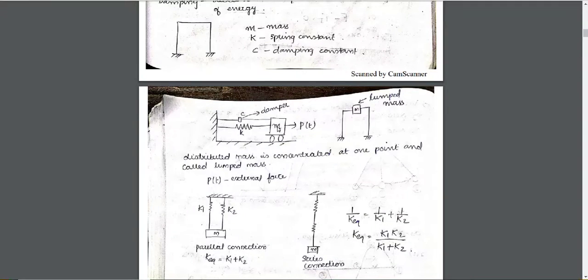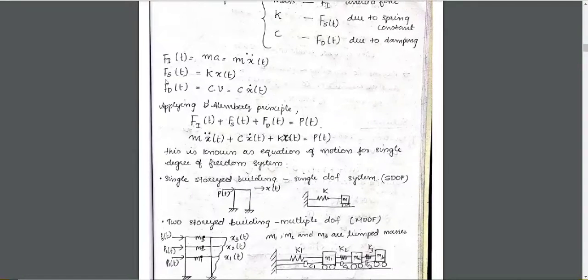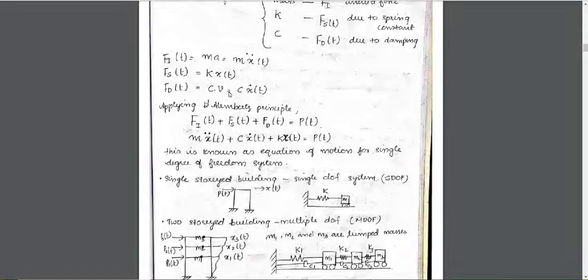For a structure, the internal forces are: the inertia force due to mass (Fi = m·x-double-dot(t)), the spring force Fs due to spring constant k (Fs = k·x(t)), and the damping force Fd due to damping constant c (Fd = c·x-dot(t)).